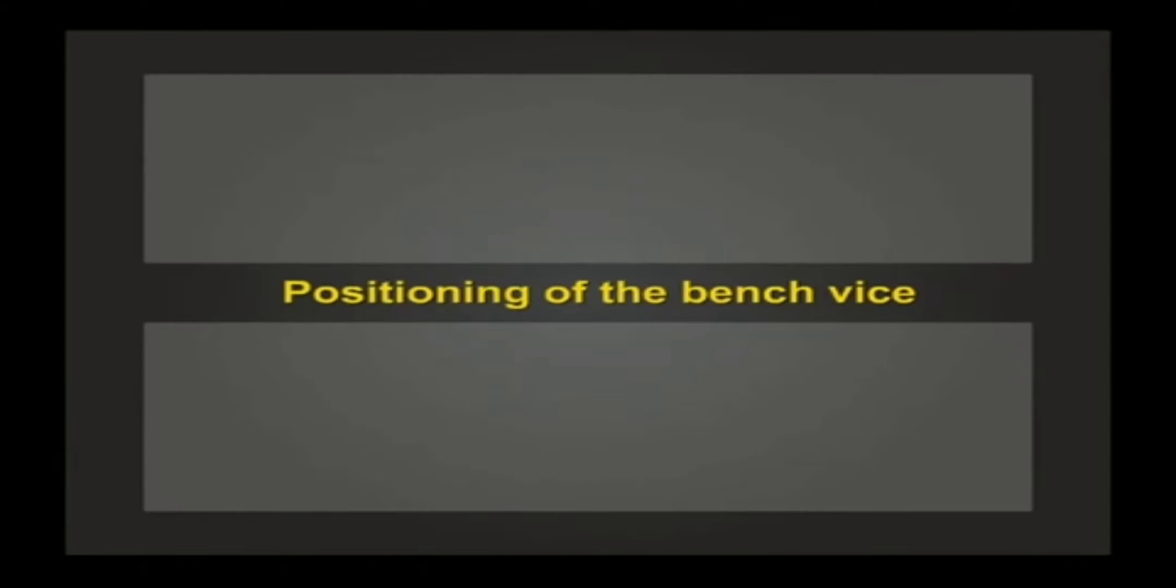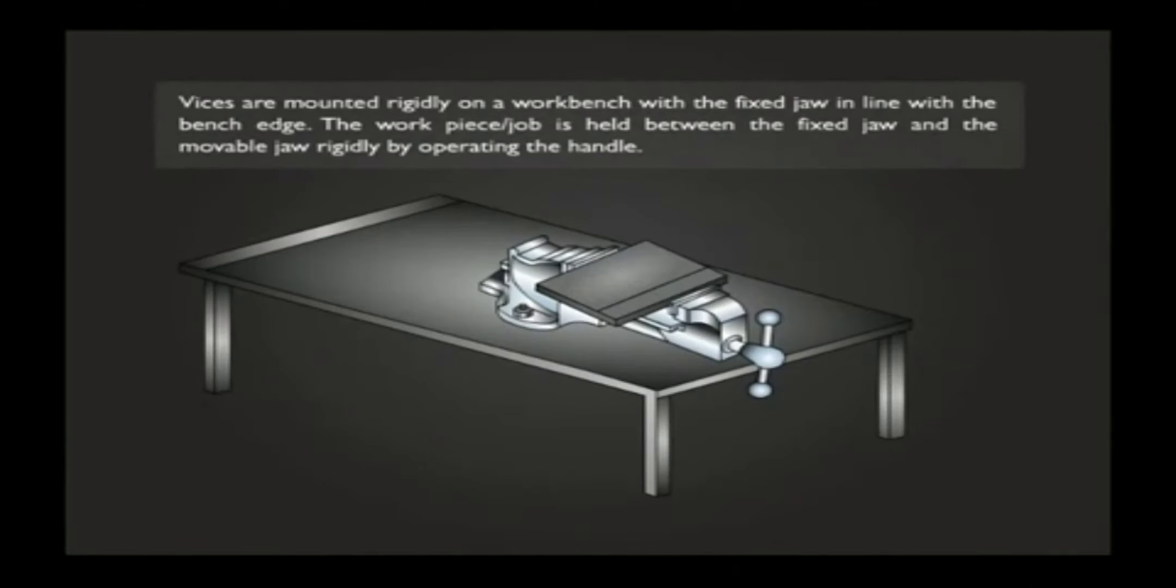Vises are mounted rigidly on a work bench with the fixed jaw in line with the bench edge. The work piece or the job is held between the fixed jaw and the movable jaw rigidly by operating the handle.